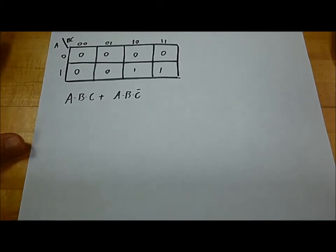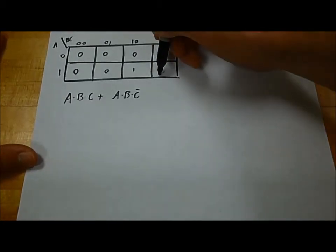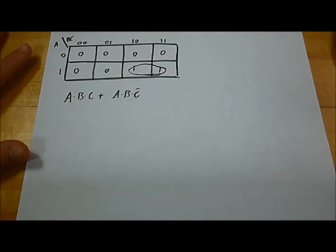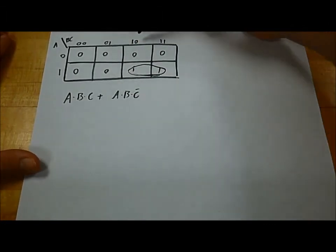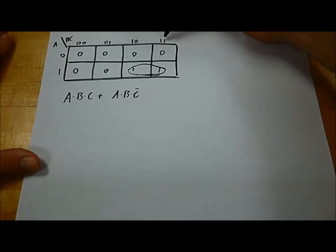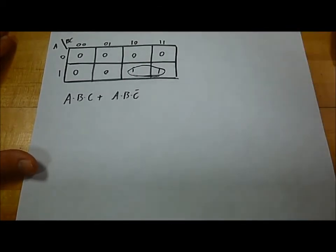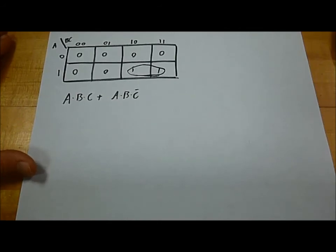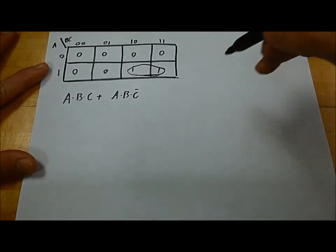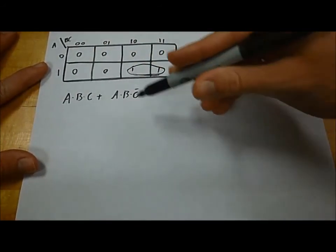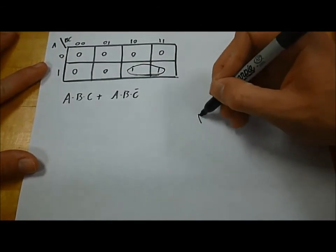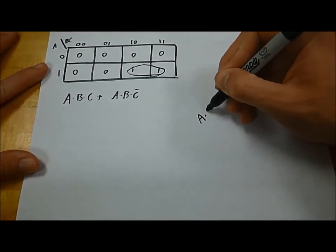Using our knowledge from last time, we can circle this group of two adjacent ones, and we can see that C changes, C goes from 0 to 1, therefore, the output does not depend on C, and we can write our equation for this entire logic circuit as A and B.